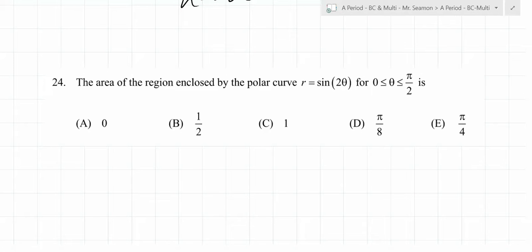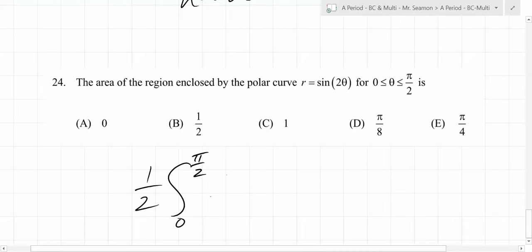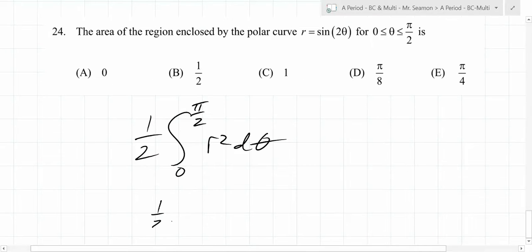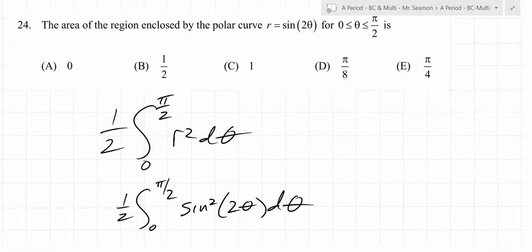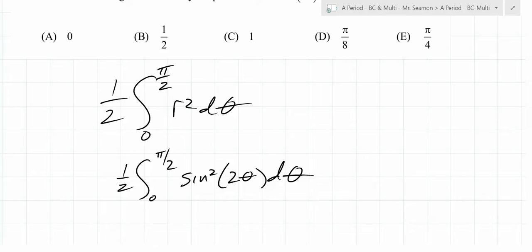The nice thing they give you on this is the interval. Sometimes they don't give you the interval and you have to figure it out without a graph. You don't know where it intersects the first time because polar graphs intersect like a trillion times - they're cyclical by definition. So you just need to remember the form for polar integration. One half the integral from 0 to pi over 2 of r squared d theta. Do we have r? Yeah. The trick on this one is you're going to have sine squared 2 theta d theta.